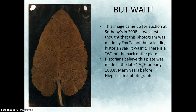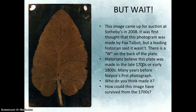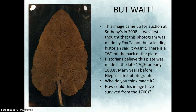There is a W on the back of the plate, so they're leaning toward somebody with a W name. Write down who you think could have made this photogram. The other question — which you'll be able to answer based on our experiences in the darkroom — is how could this image have survived from the 1700s? Wedgwood wrote many times that he had trouble getting images not to fade away. How could this image have survived from that period? Write down your answer and we'll discuss it next class.